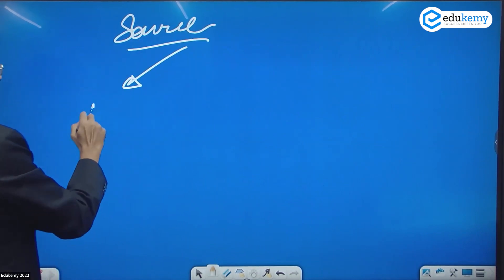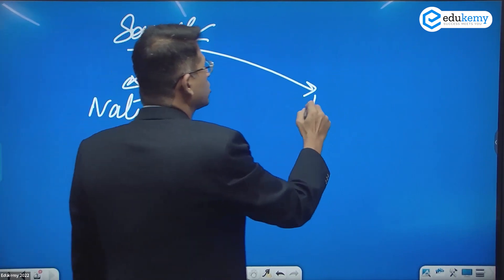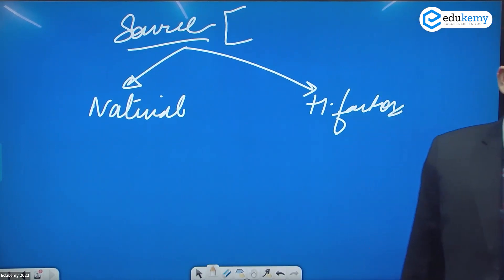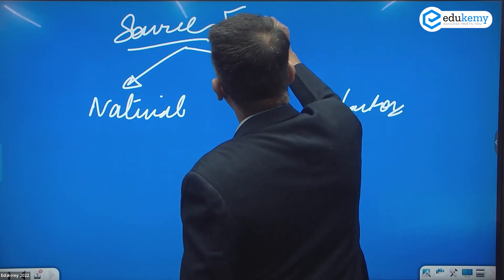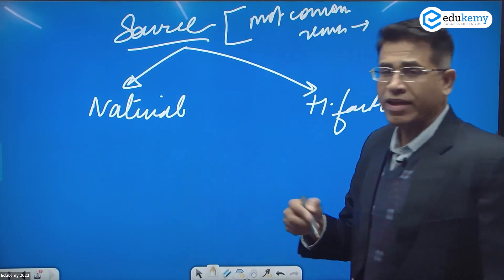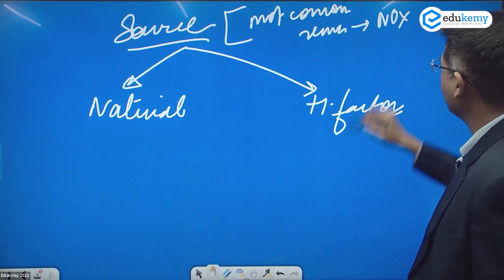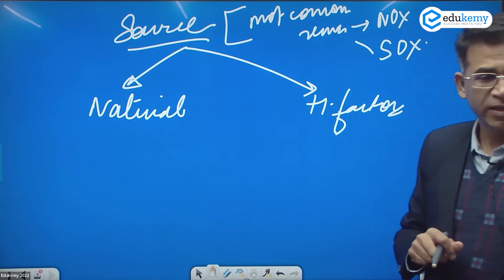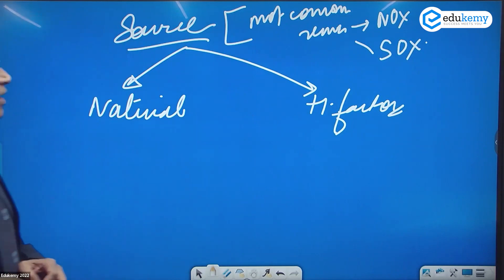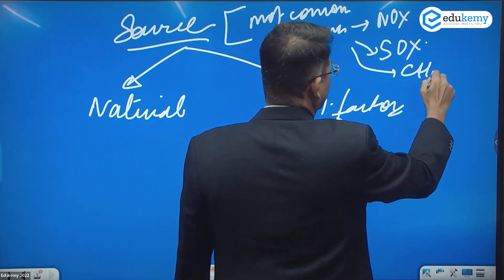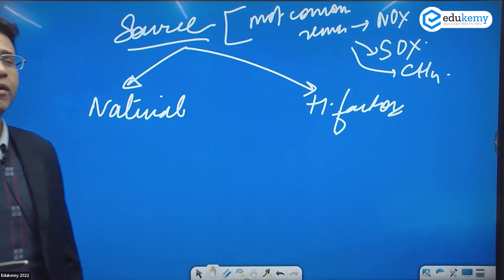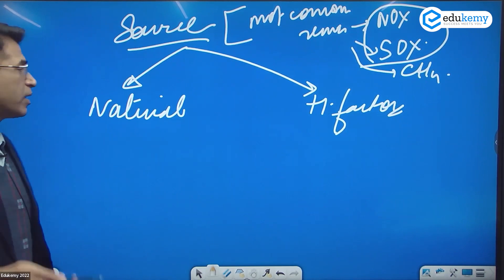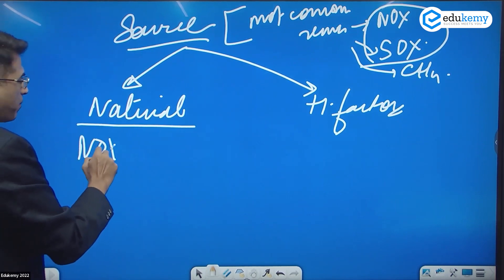What is the source of acid rain? Acid rain can be natural and it can also be because of human factors. The two most common reasons are nitrogen compounds in the air and sulfur compounds in the air — forming weak nitric acid types and weak sulfuric acid types. Nitrogen oxides and sulfur oxides mix with water to cause acid rain.